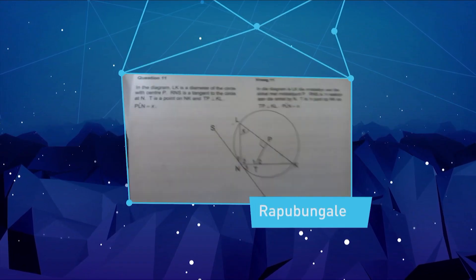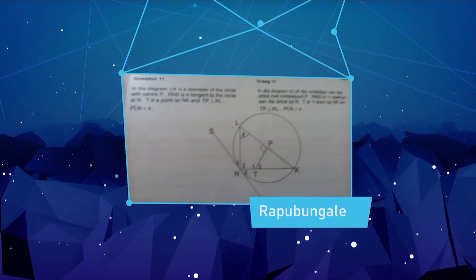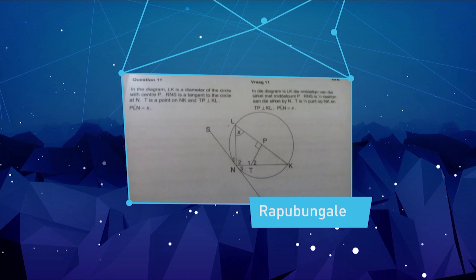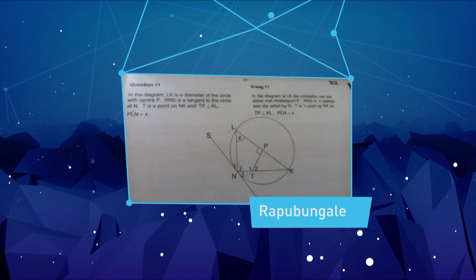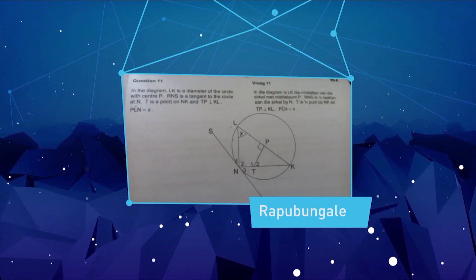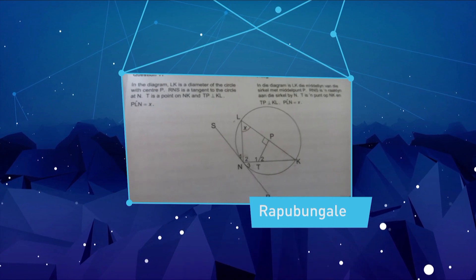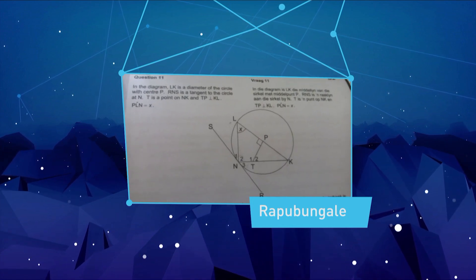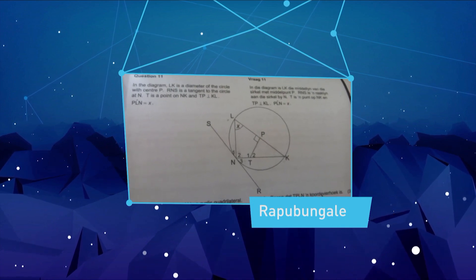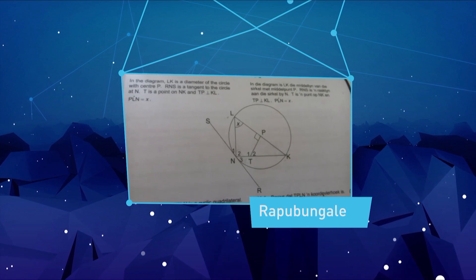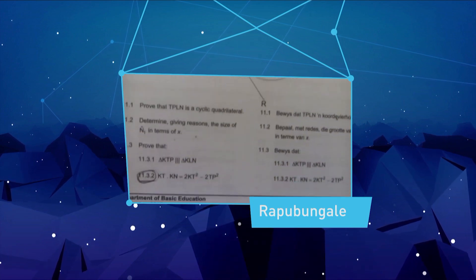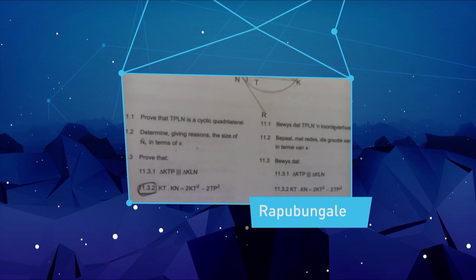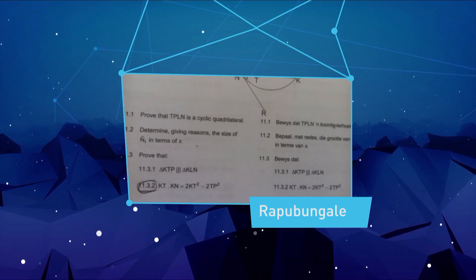Let's see what he has to say: 'Hi, my name is Rappapunga Ghali and I would like assistance with a February/March paper two question. In the diagram, LK is a diameter of a circle with center P. RNS is a tangent to the circle at N. T is a point on NK and TP is perpendicular to KL. Angle PLN equals X. The question I'd like assistance with is 11.3.2: prove that KT times KN equals KT squared minus 2TP squared.'